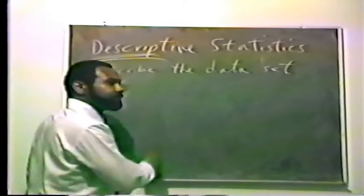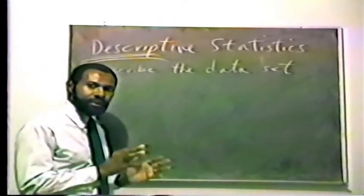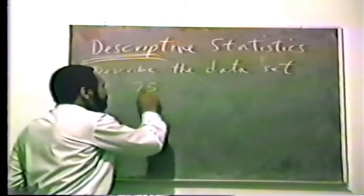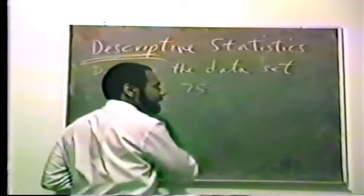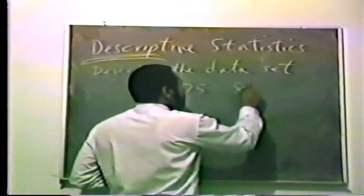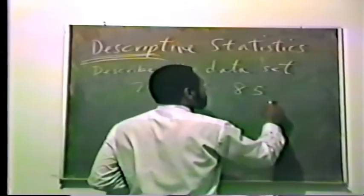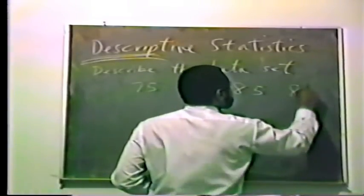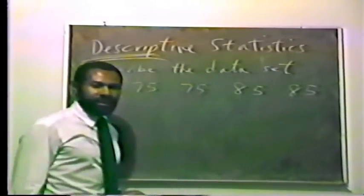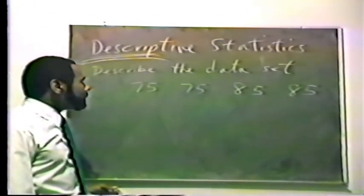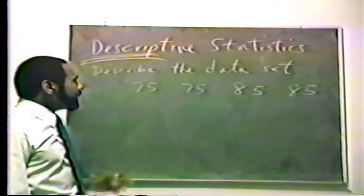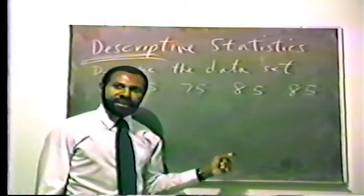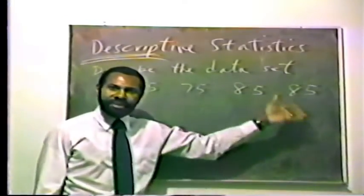For example, we might have a set of test scores. Let's say we have four test scores: 75 on the first test, 75 on the second test, 85 on the third test, and 85 on the fourth test. A descriptive statistic will describe this data set — will describe these numbers.